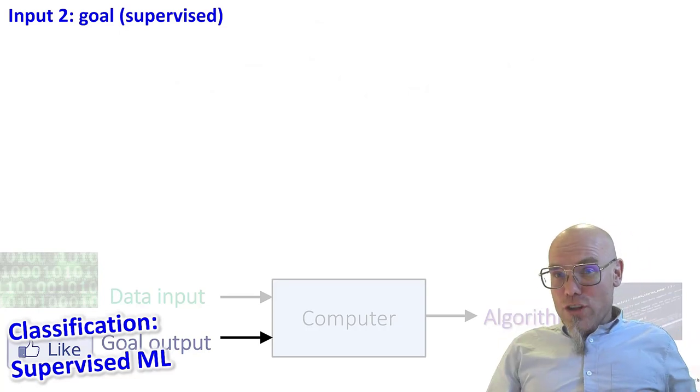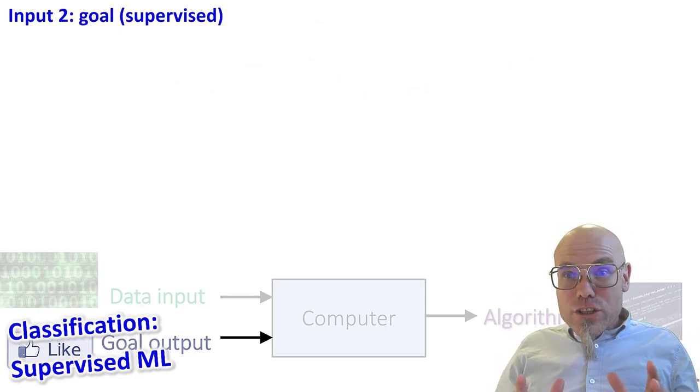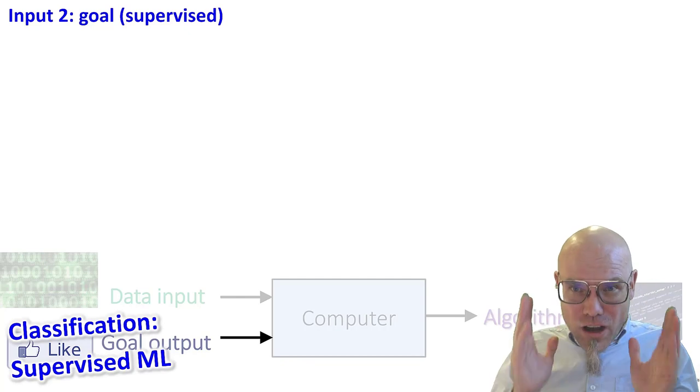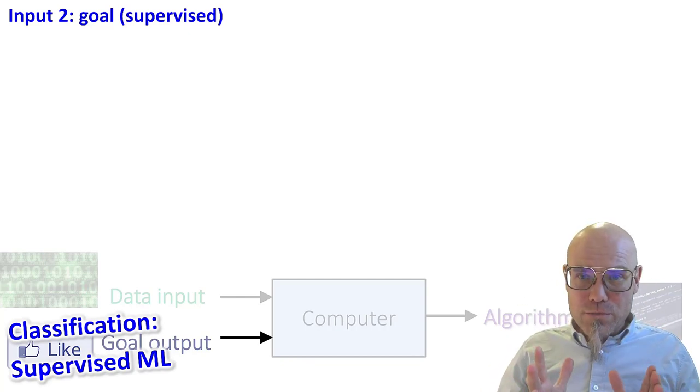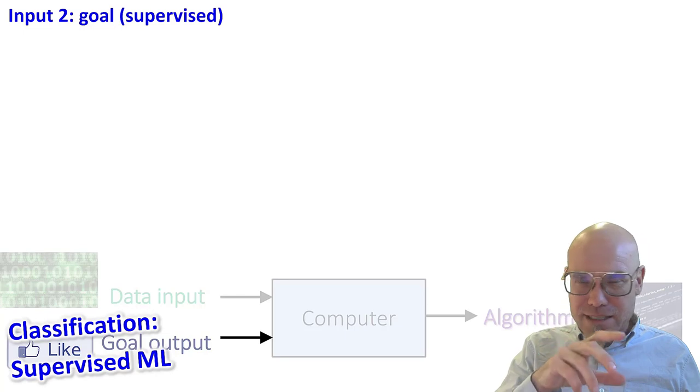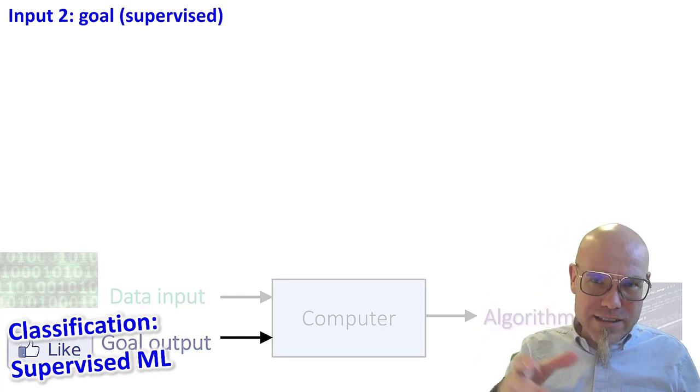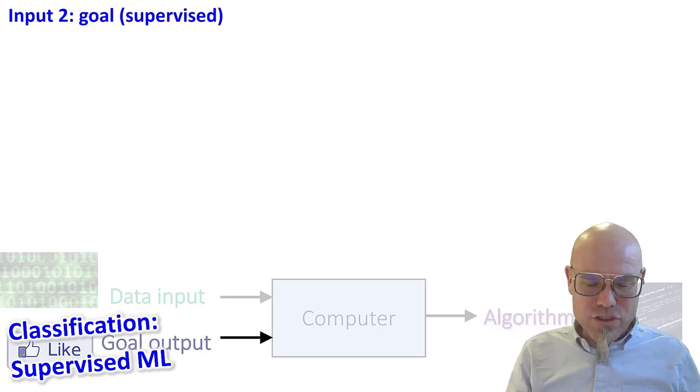Supervised learning is maybe the most intuitive and a lot of machine learning nowadays is supervised learning. So if social media recognizes images and recognizes your relatives, all of that is supervised machine learning.